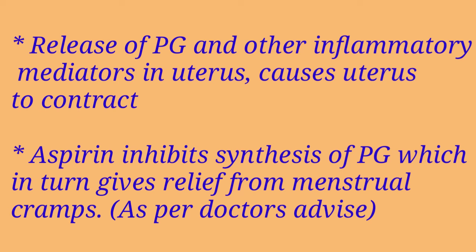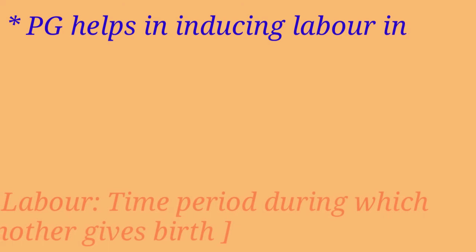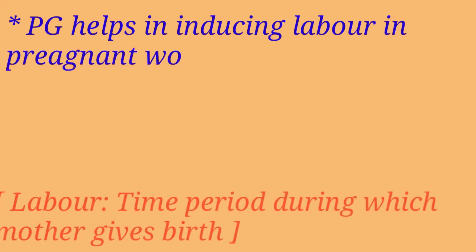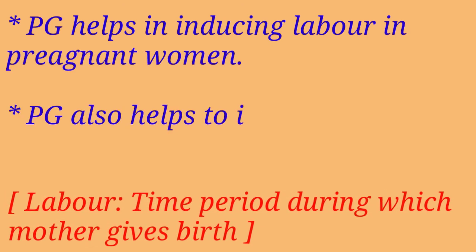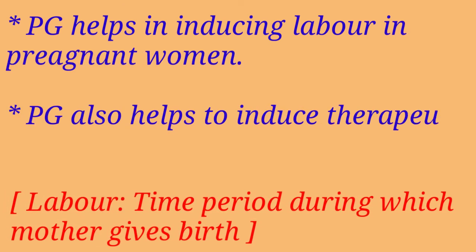Inhibiting the synthesis of prostaglandin by using drugs such as aspirin or ibuprofen can give relief from menstrual cramps. Prostaglandin also plays a role in inducing labor in pregnant women and is also given to induce therapeutic abortion.